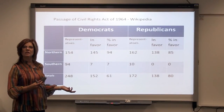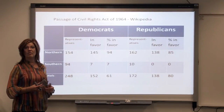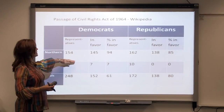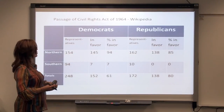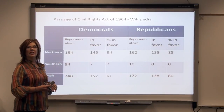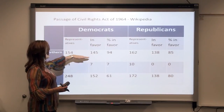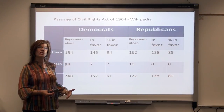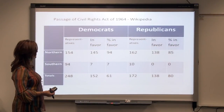So how can that be? It looks like at the bottom line Republicans voted more heavily in favor at 80%. What happened is there were more representatives in the northern states for both Democrats and Republicans. Since there was higher representation in the northern states, those percentages in favor influenced the bottom line more heavily because there's more representation in the northern states.